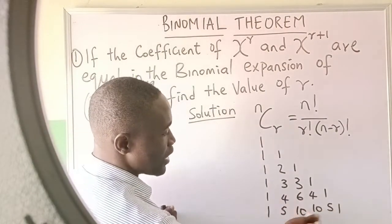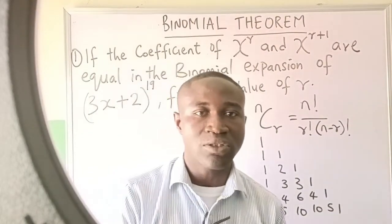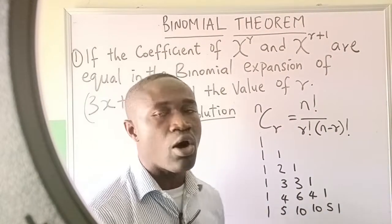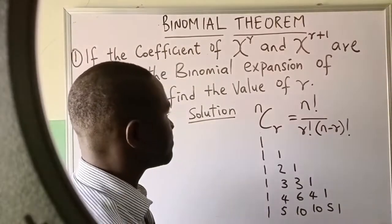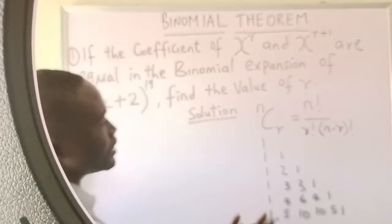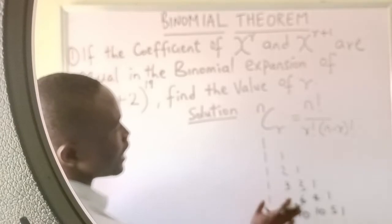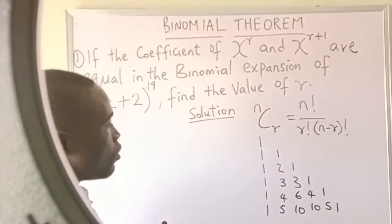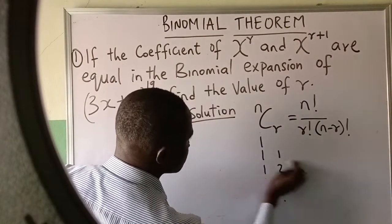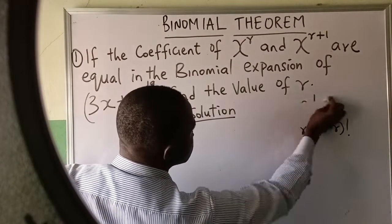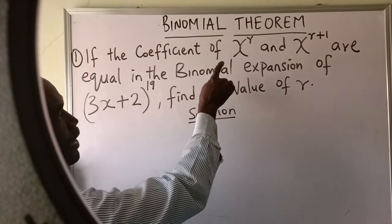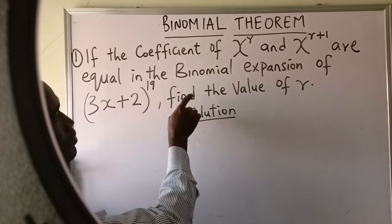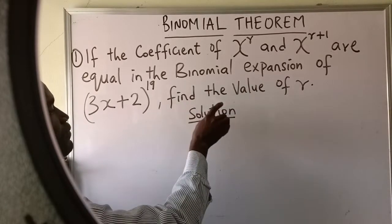That is why we call it Pascal's triangle, because it was introduced or discovered by a man called Pascal. Now the question says: if the coefficients of x to the power 2r and x to the power 2r plus one are equal in the binomial expansion, find the value of r.